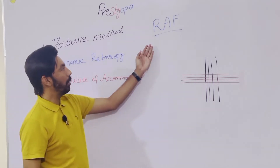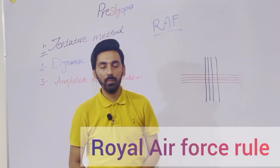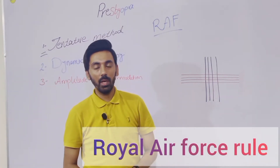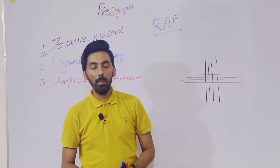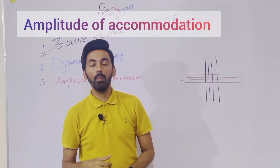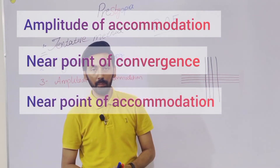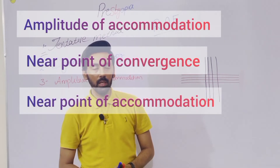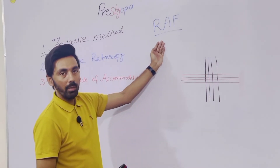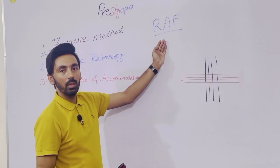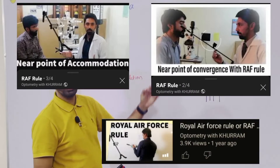The answer is: with the help of the RAF Rule — the Royal Air Force Rule. With the help of the Royal Air Force Rule, we can find the amplitude of accommodation, we can find the near point of convergence, and we can find the near point of accommodation. These three phenomena we can find with the help of the RAF Rule. If you want a detailed video regarding the RAF Rule, you can watch the linked video — the link is in the description.